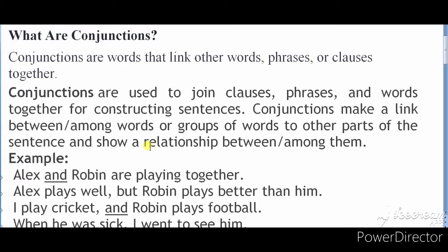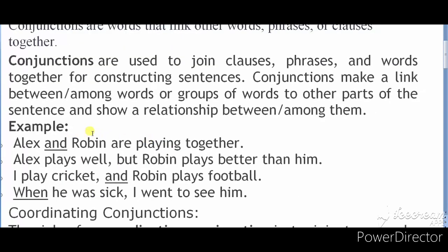A conjunction is a link between a word or group of words, or other parts of a sentence, showing a relationship. For example: 'Alex and Robin are playing together.' Here we have our conjunction 'and'.